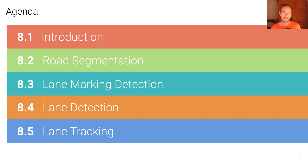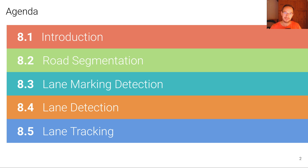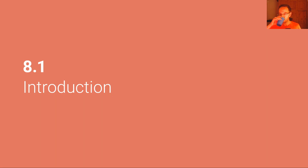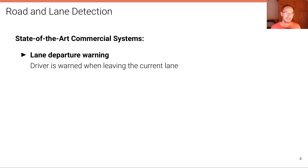This lecture is subdivided into five units. First, we're going to introduce and motivate the problem of road and lane detection. In the second unit we'll talk about road segmentation and semantic segmentation. In the third unit we will talk about lane marking detection, and then about lane detection, which summarizes lane markings into a coherent lane estimate for controlling the vehicle. Finally, we'll see a simple algorithm for the lane tracking problem — how we can integrate lane detection estimates over time.